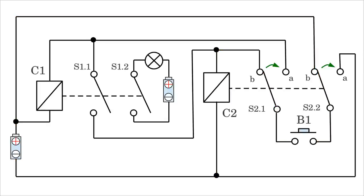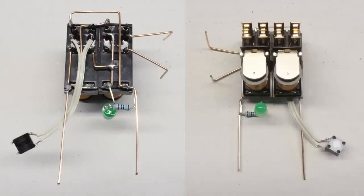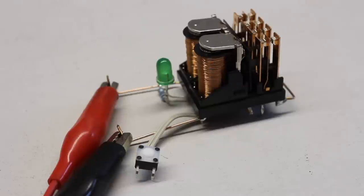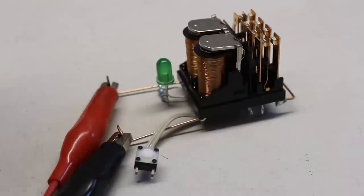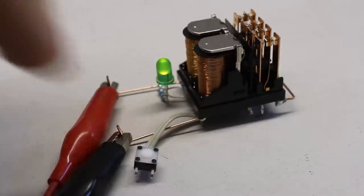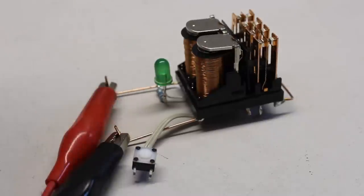As soon as the button is released, the current running through coil 2 is cut off. When the coil of relay number 2 is de-energized, S2.1 and S2.2 fall back to their rest position, by which the initial state of the circuit is reached. The real circuit shown here is composed of two 12V relays. A leg composed of a 180 ohm resistor and an LED switched in parallel to the coil of relay number 1 makes it possible to operate the toggle flip-flop with a supply voltage of just 12V. One pulse sets the output and another one resets the flip-flop.